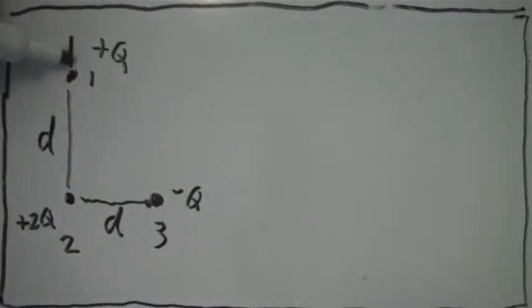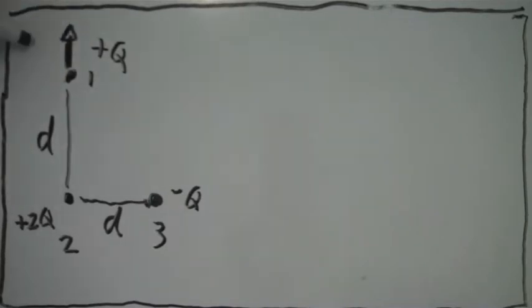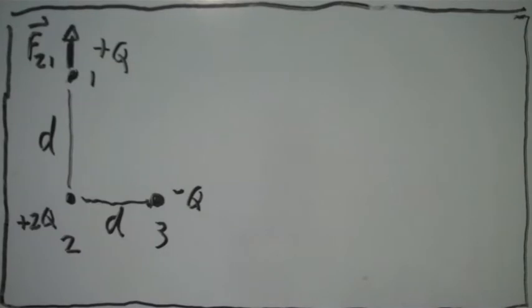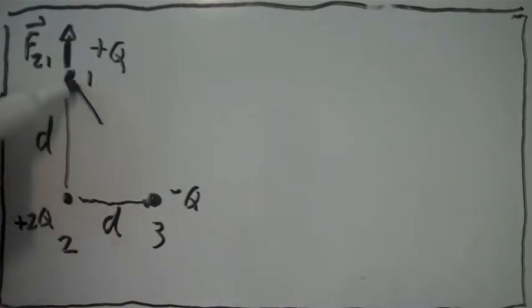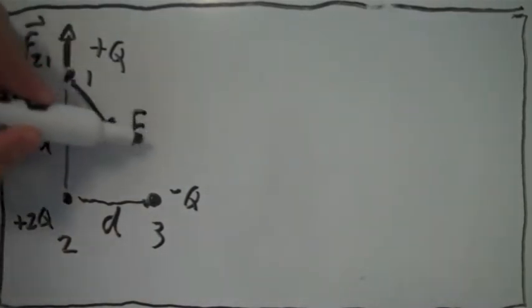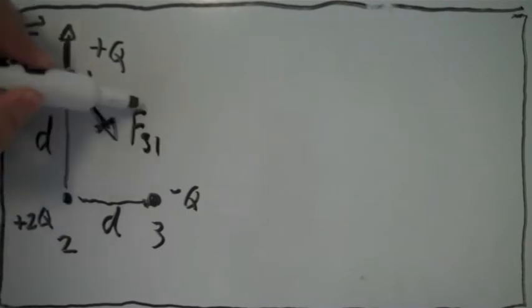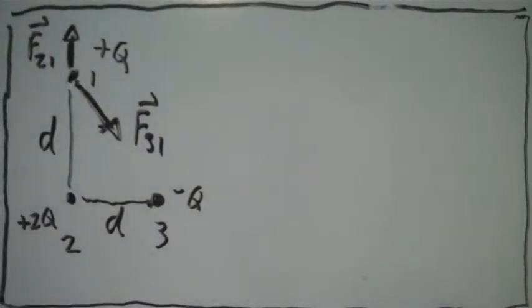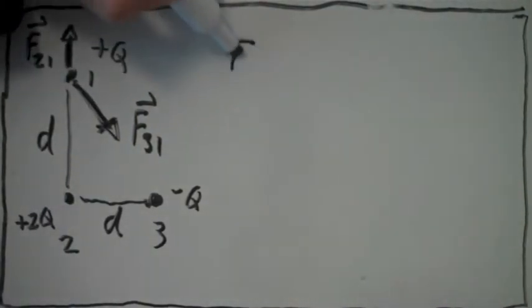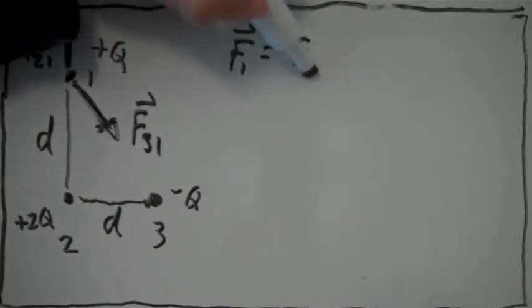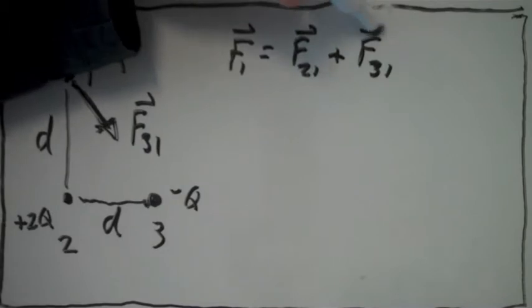The total force on charge 1 is the force from charge 2 on charge 1 and the force from charge 3 on charge 1 — that's an attractive force. So the total force on charge 1 is equal to the force of charge 2 on charge 1 plus the force of charge 3 on charge 1.